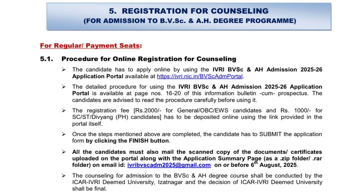Let's talk about the registration process. First of all, you have to visit the website or link mentioned in the description and apply there. The registration fee is rupees 2000 for General and OBC EWS candidates, and 1000 for SC/ST or Divyang (physically handicapped) candidates. After filling the application form, you have to upload the documents and then make the payment, which is the registration fee, and then submit the application form.